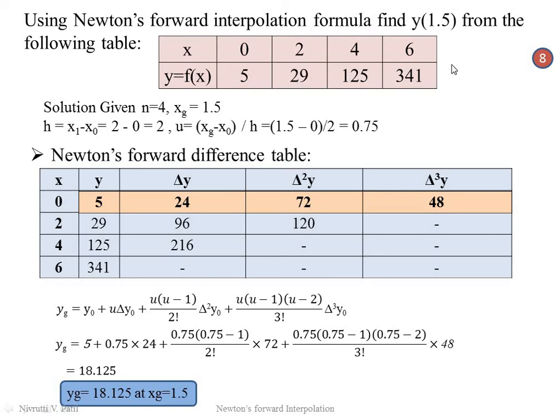In the SPP examination, this numerical may be asked for 8 marks. The mark distribution is: 1 mark for calculating u and h, 3 marks for preparing the forward difference table, 2 marks for writing the yg formula and substituting values, and 2 marks for obtaining the final solution.